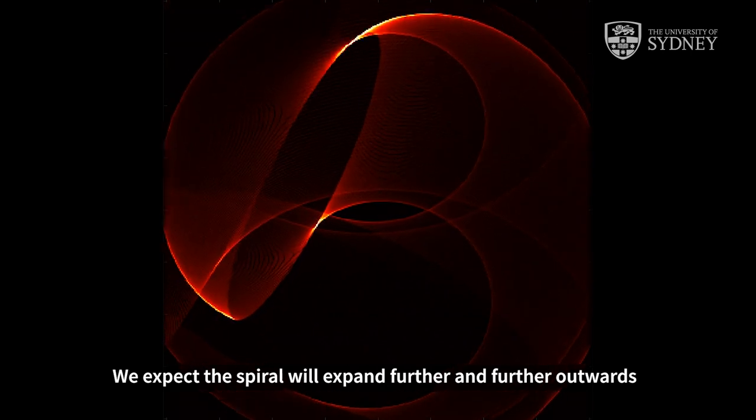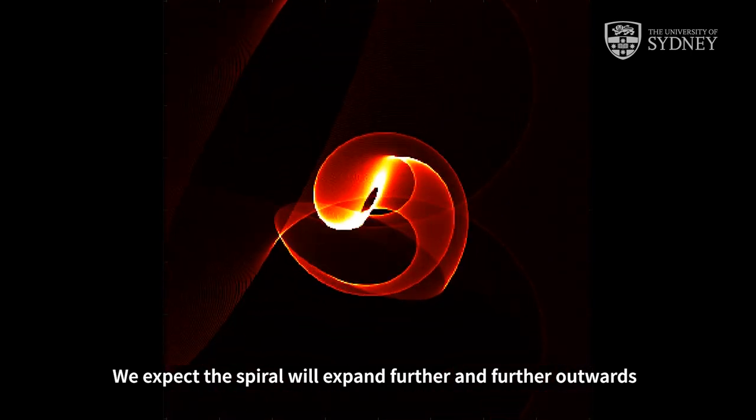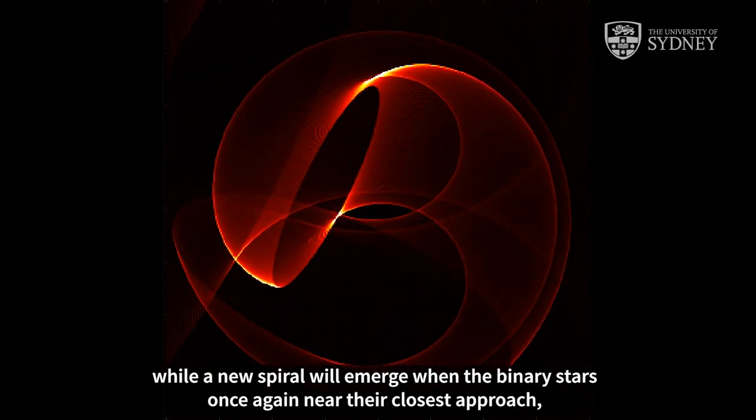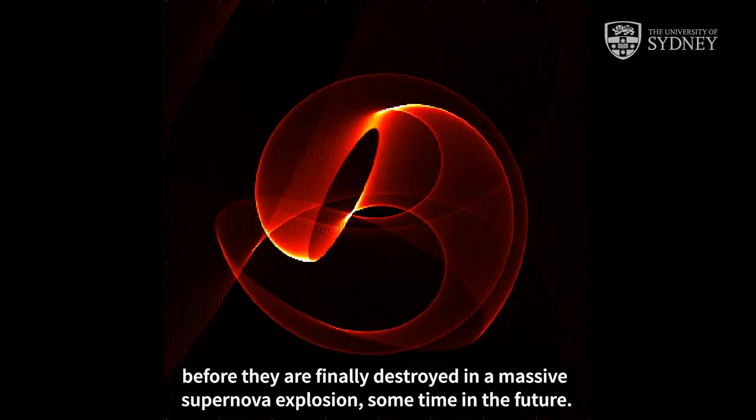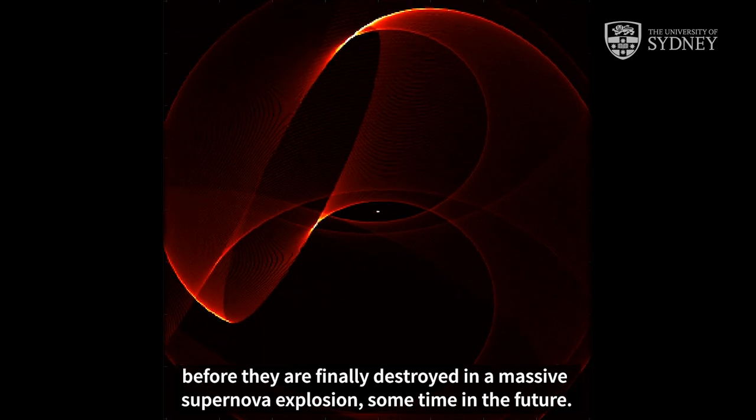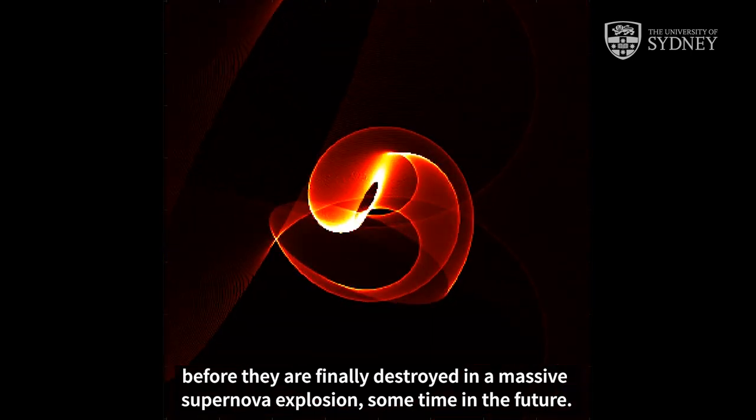We expect the spiral will expand further and further outwards, while a new spiral will emerge when the binary stars once again near their closest approach, before they are finally destroyed in a massive supernova explosion sometime in the future.